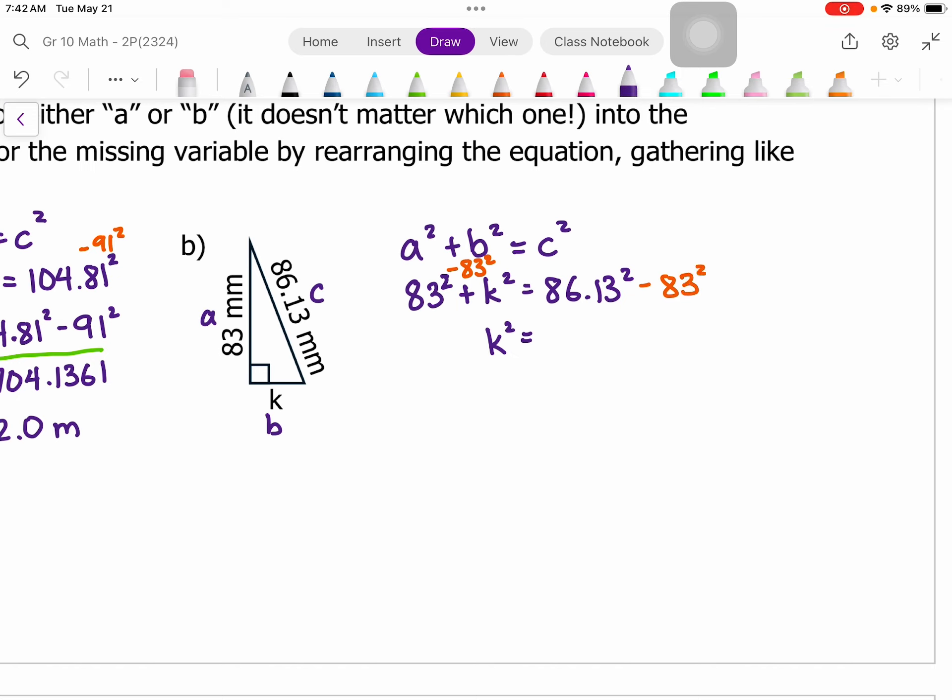So I have 86.13 squared minus 83 squared. And if I square those and do the subtraction, that's equal to 529.3769. I'm going to square root both sides and solve for k. So k is equal to 23.0, and my units are in millimeters.